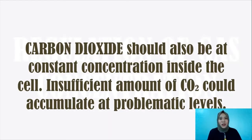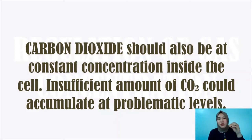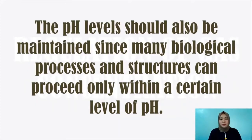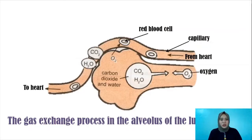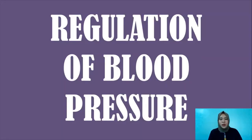Aside from oxygen, carbon dioxide should also be maintained inside the body. Insufficient or excessive amounts of carbon dioxide could accumulate to problematic levels. If there are disturbances in the amount of carbon dioxide in your bloodstream, it will also affect the pH level in your body, which prevents your cells and organs from functioning properly. This is just an illustration of the alveolus — the air sac inside your lungs — where gas exchange happens.